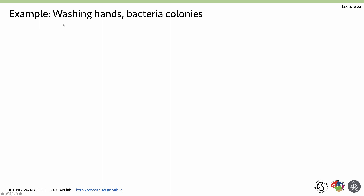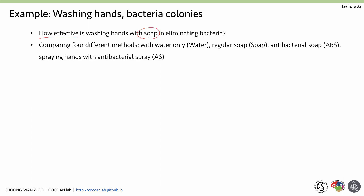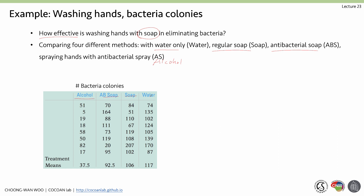Today we are going to start with this example: washing hands and bacterial colonies. The question is how effective is washing hands with different types of soap in eliminating bacteria. We are going to compare four different methods: water only, regular soap, antibacterial soap, and spraying hands with antibacterial alcohol spray. These are the number of bacterial colonies from each observation, where each row is one observation.